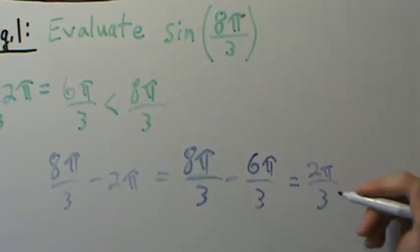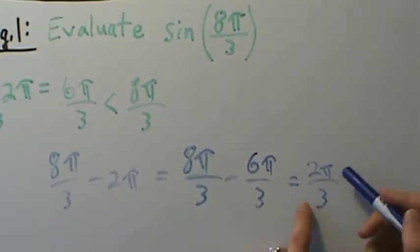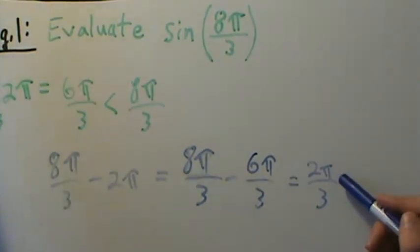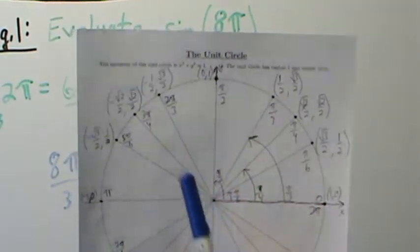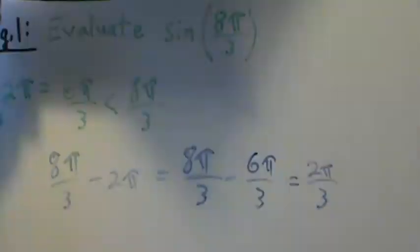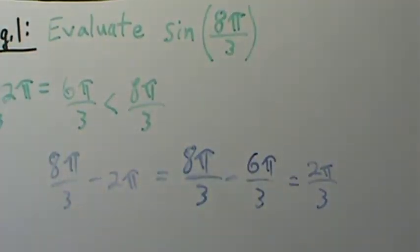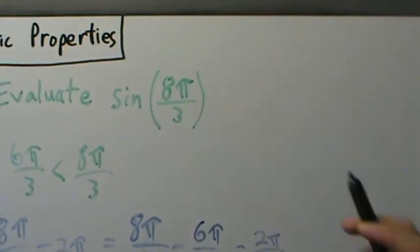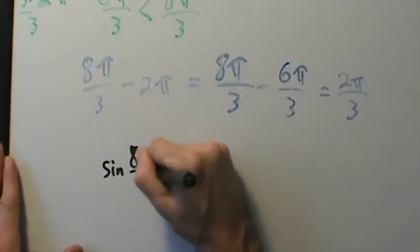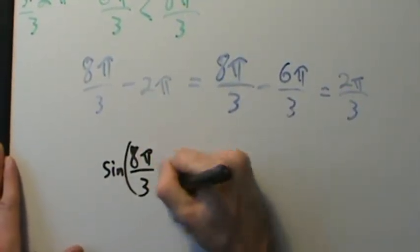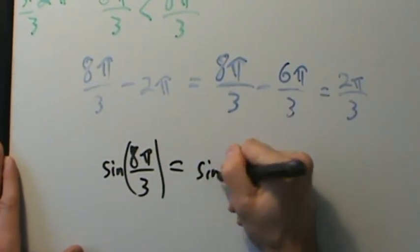2π over 3 is a common special angle on the unit circle. So here's π over 3, here's 2π over 3. Periodic properties tell us that sine of 8π over 3 equals the sine of 2π over 3.